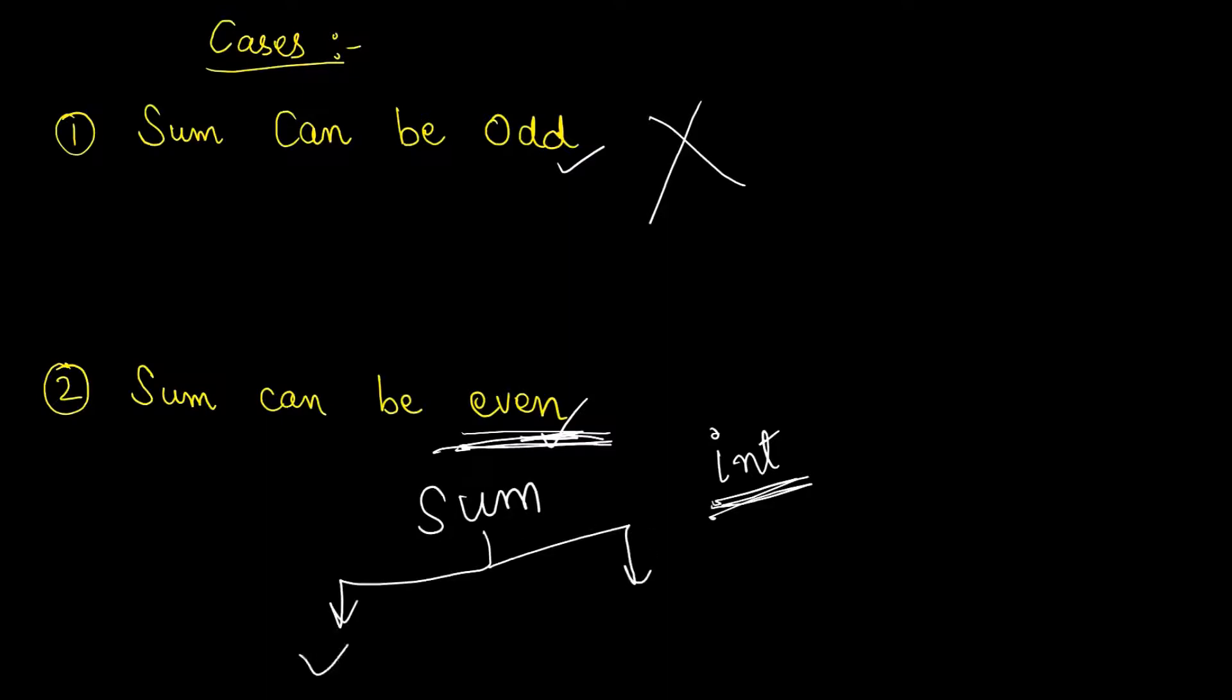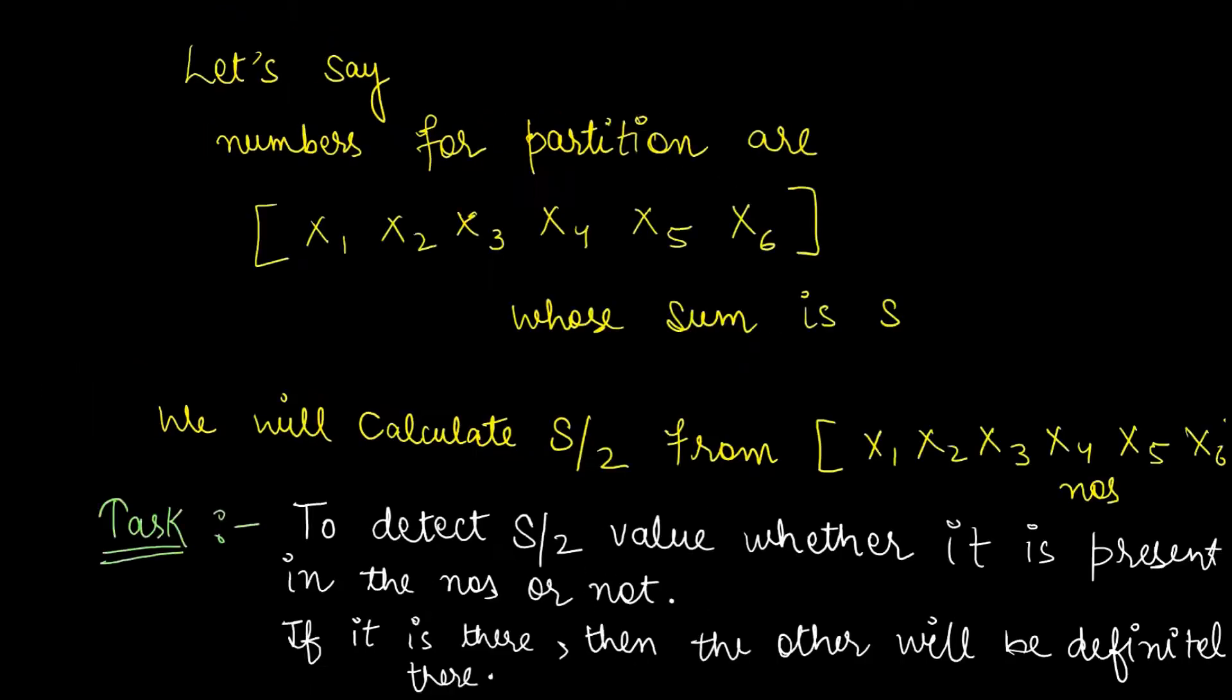So how can we handle this? This we can handle. Let's say we have numbers for partition: x1, x2, x3, x4, x5, x6, whose sum is S, and we are assuming it to be even. Then we need to calculate S by 2 from these numbers, so as to divide it into two partitions or rather in two subsets.